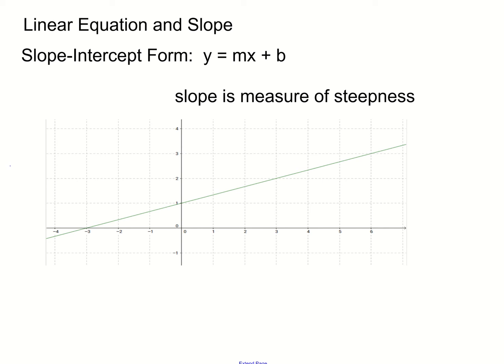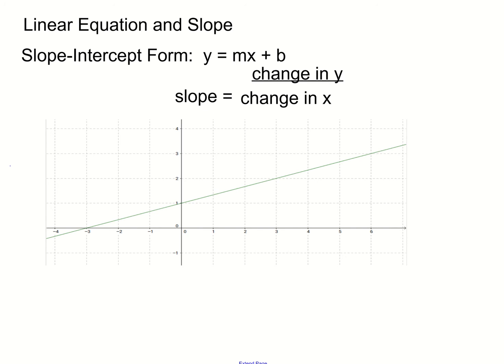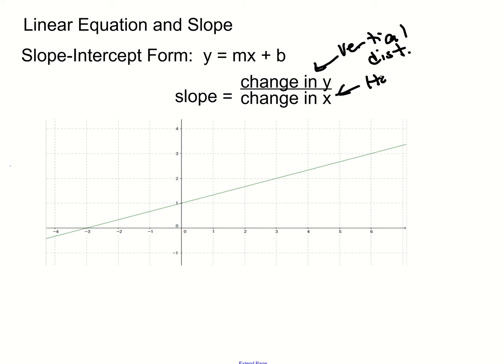In this example the line is going uphill, so we have a positive slope. To calculate the slope, we find the change in y and divide that by the change in x. The change in y is your vertical distance, and the change in x is your horizontal distance — we talked about vertical distance in lesson 1.3 when we partitioned lines.